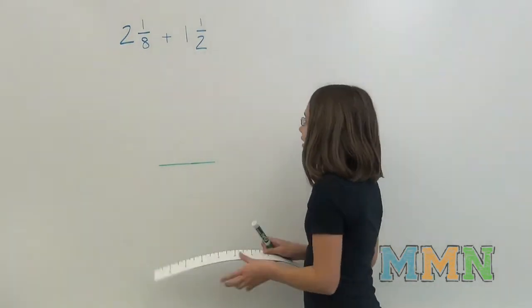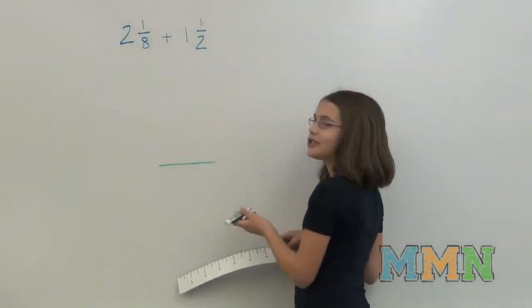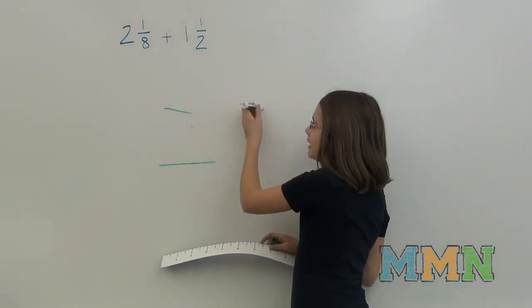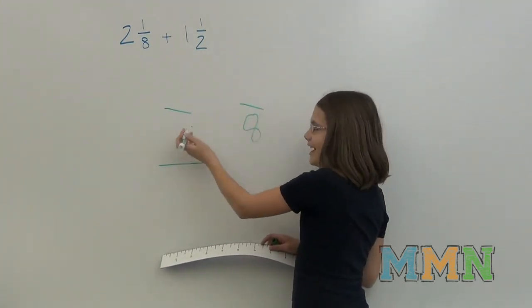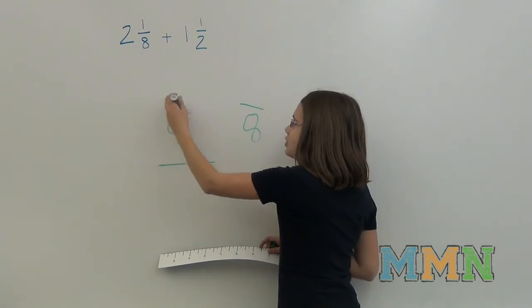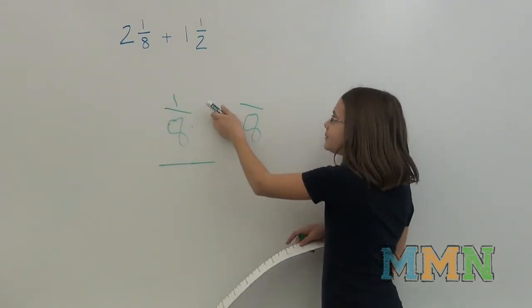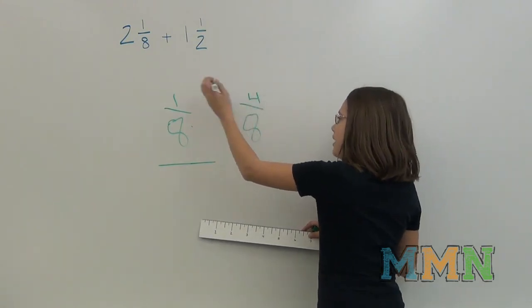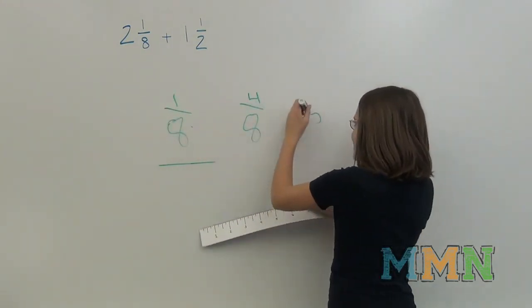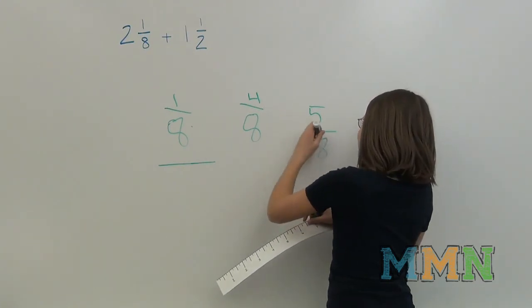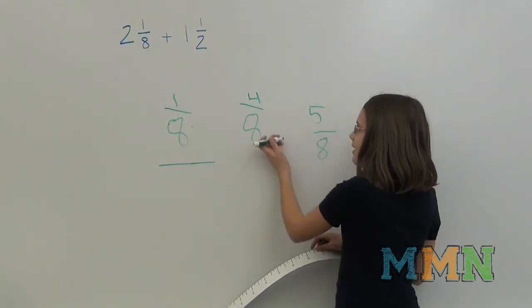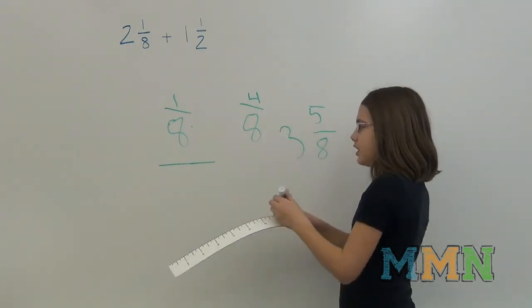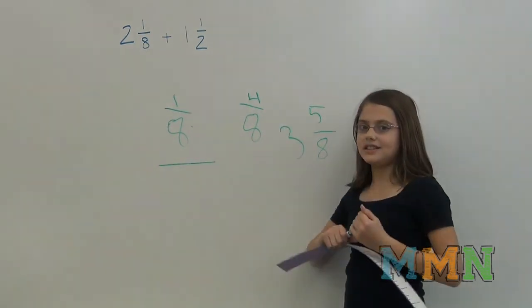So, let's check to make sure it's right. We can change 1 half to a denominator of 8, just like 1 eighth. And 2 times 4 is 8, so 1 times 4. It would be 4 eighths plus 1 eighth equals 5 eighths. And then add the wholes together, which is 3. So our answer is 3 and 5 eighths inches.